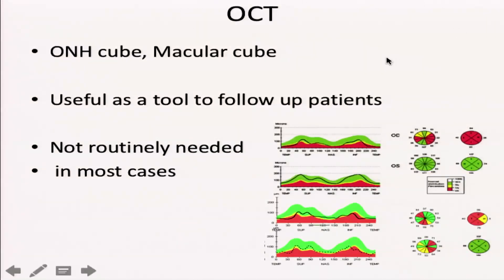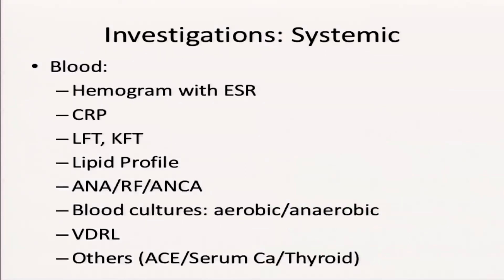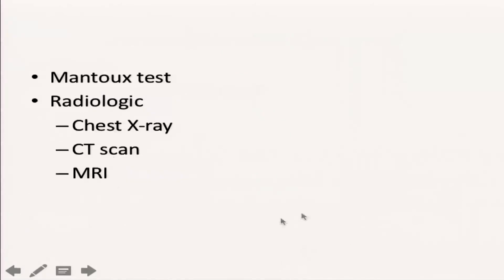OCT is useful in certain specific situations and will be covered in the dedicated neuro-ophthalmology OCT talk, but if you have access to OCT, it's definitely helpful. For systemic investigations, you need a hemogram, chest X-ray — in a country like India we must look for tuberculosis — autoimmune profiles, blood sugars, and assessment of any systemic risk factors. In special situations you may need tests like syphilis serology. Imaging and radiology investigations — X-ray, CT, and MRI — have different indications that I won't detail here, but this covers the complete list. Thank you.